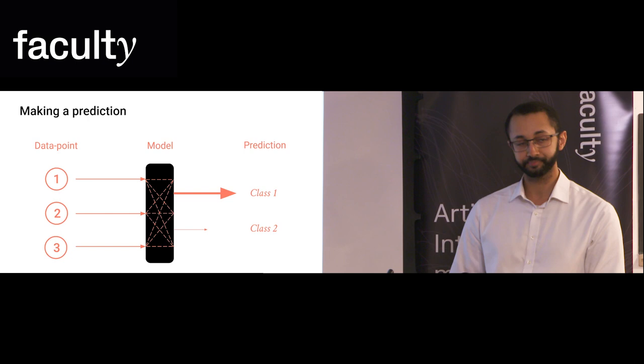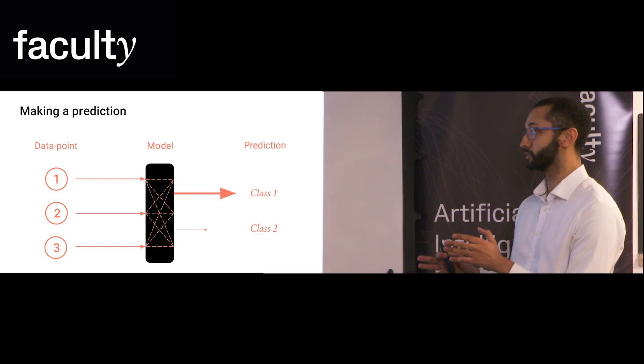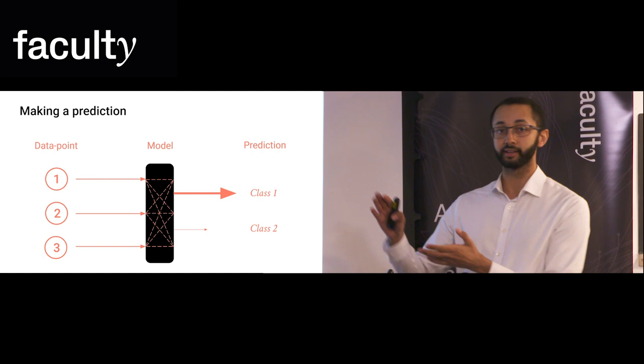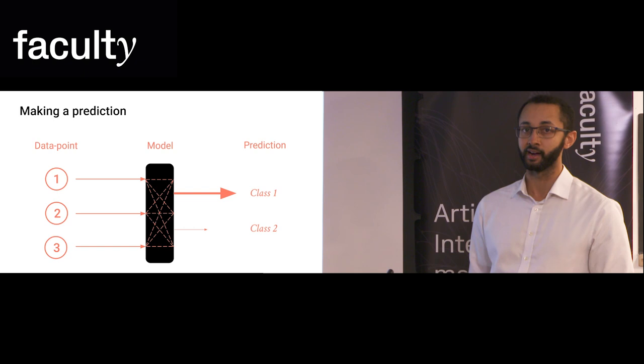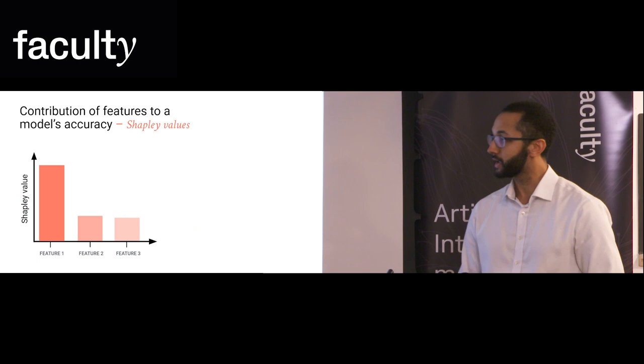So how does this work? We have some data with features. We pass these features to a model and it does impossibly many calculations that a human couldn't possibly hope to follow and then it spits out a prediction. In the case of Amazon, they could have some features of the CV and this would be to either pass the CV to a human or reject it outright. However, what we want to do is work backwards and figure out which of these features really contributed to this outcome.